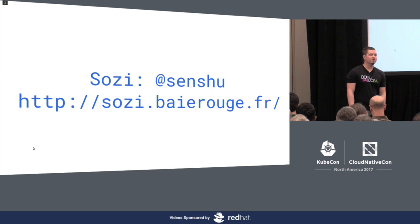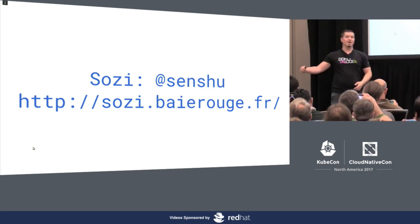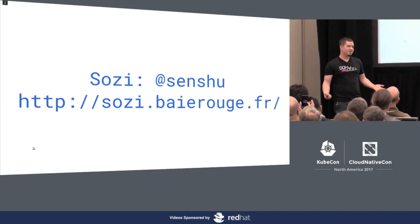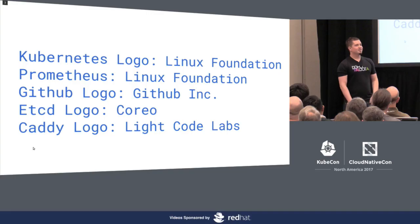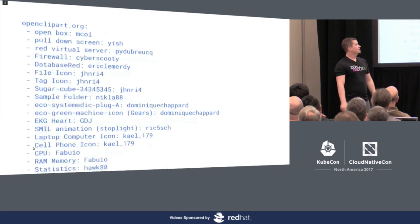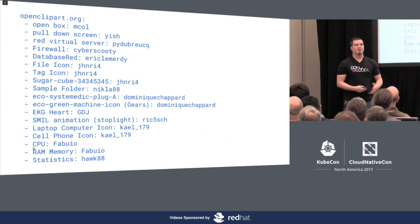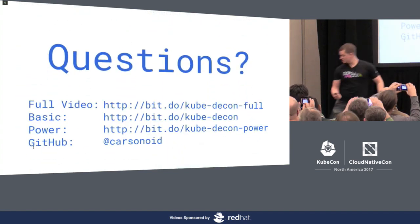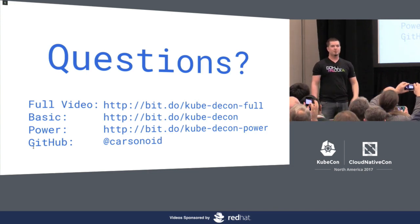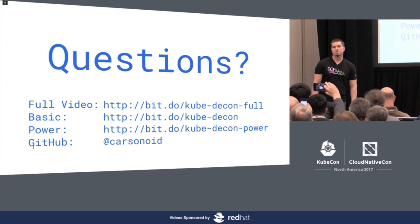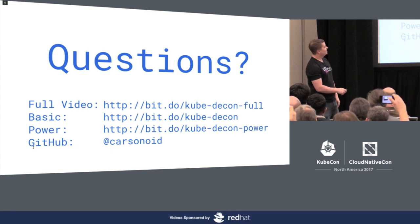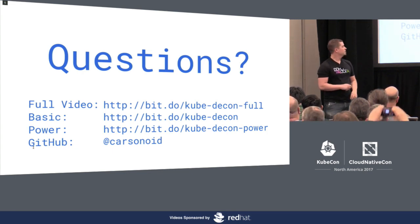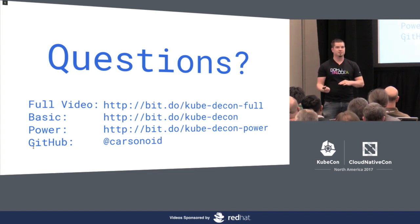Moving on to credits: I use Sozi as my presentation software — it's open source. You make an SVG, animate every layer independently, and it spits out web server files. If you like Prezi but don't want to pay for it, this is a great option. All the logos used are properties of their respective companies, and OpenClipart was immensely helpful for diagrams and art. I do have a few minutes for questions. Here are all the links — I'll keep this up as long as I can and probably move it to a free Red Hat cluster. If you want the video, there's a placeholder at that link.